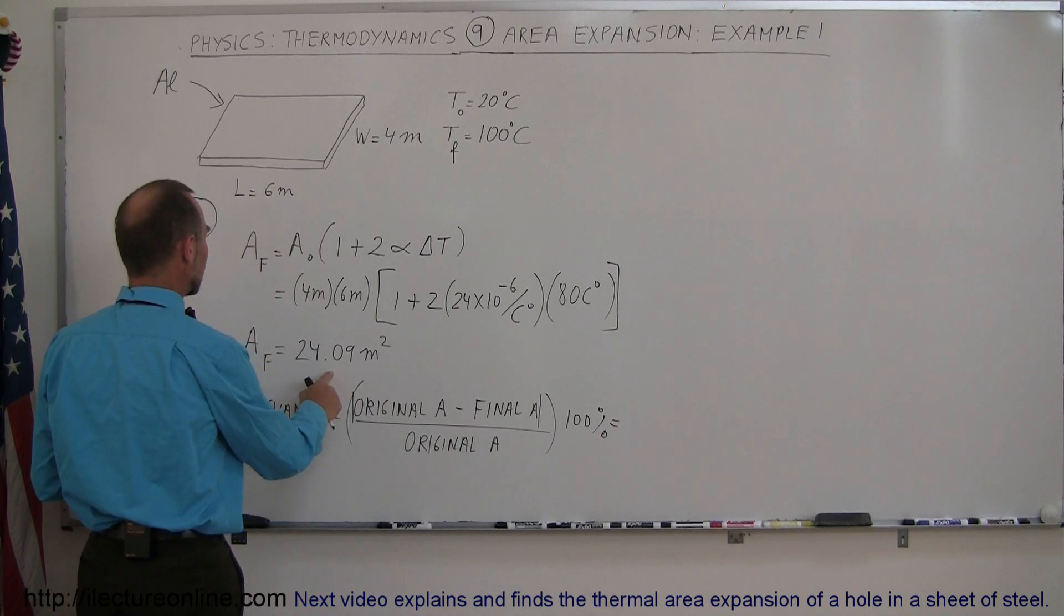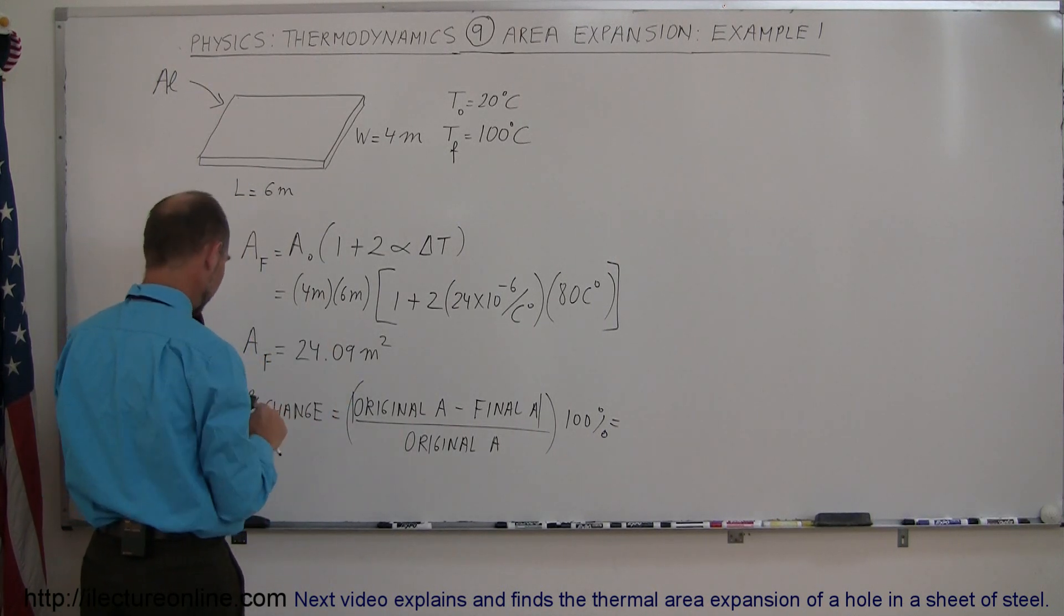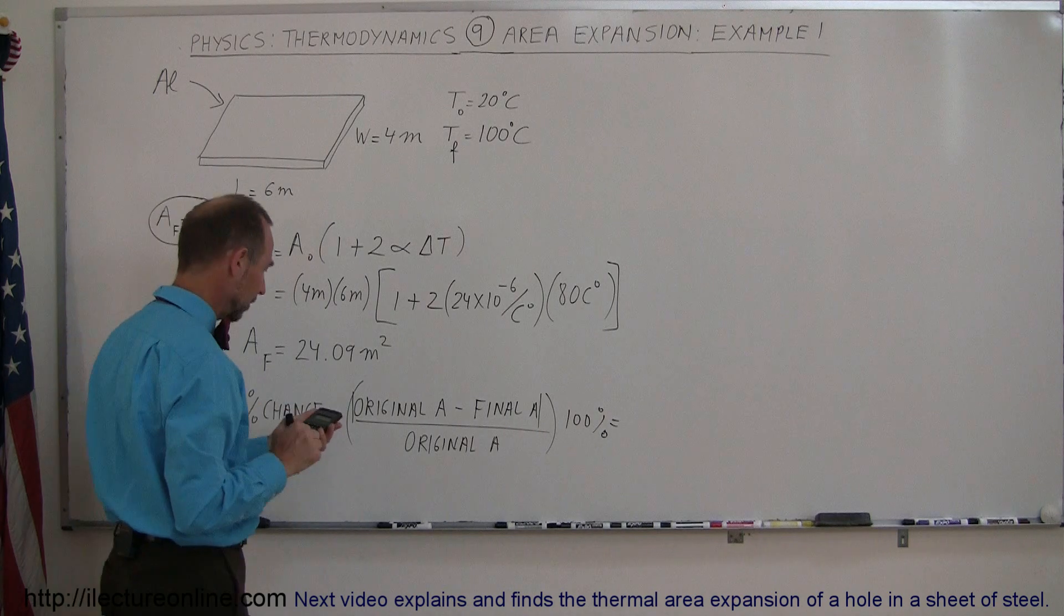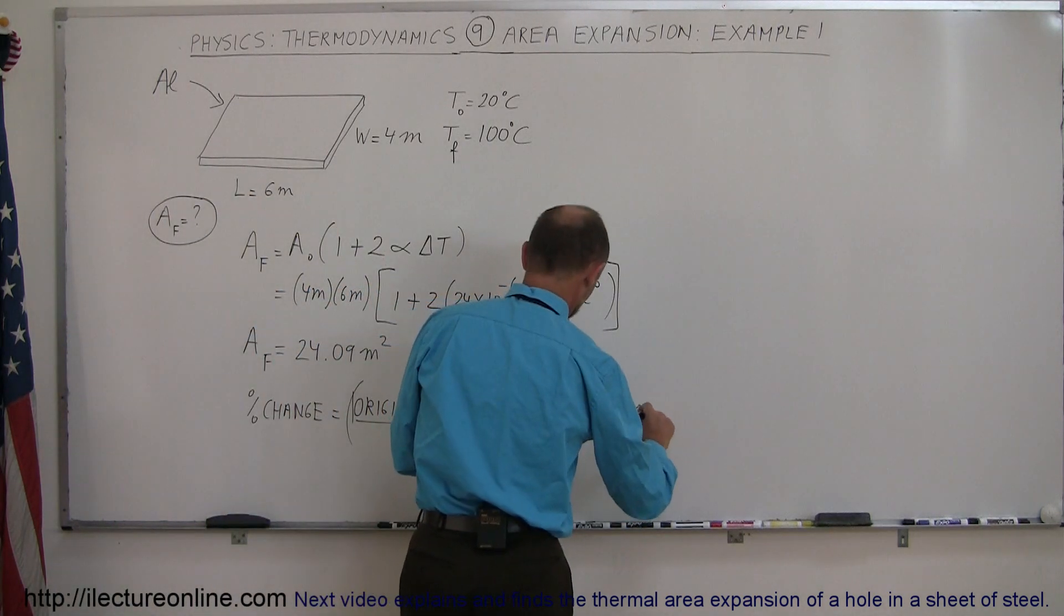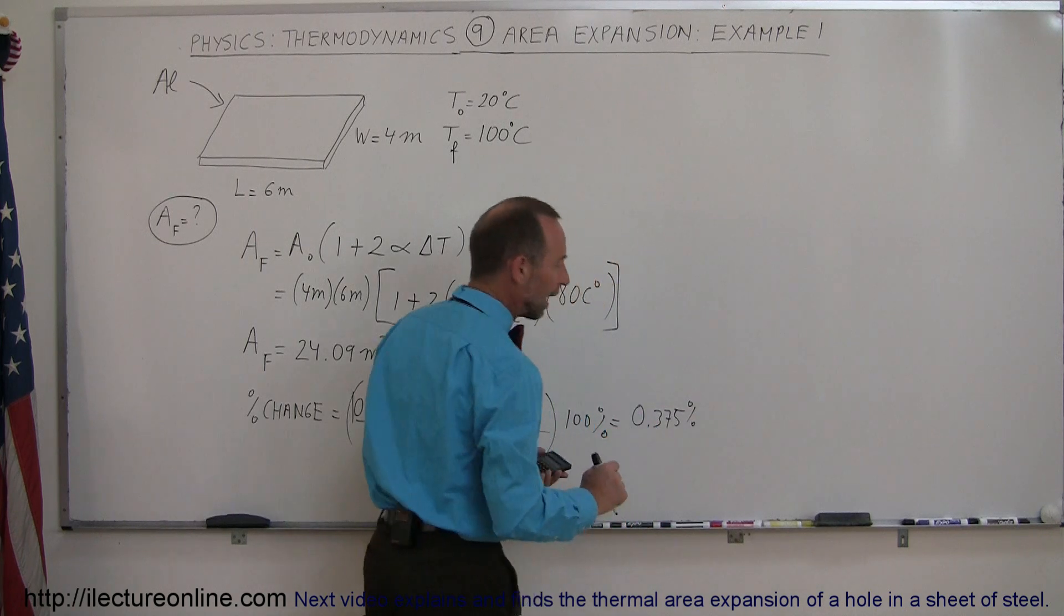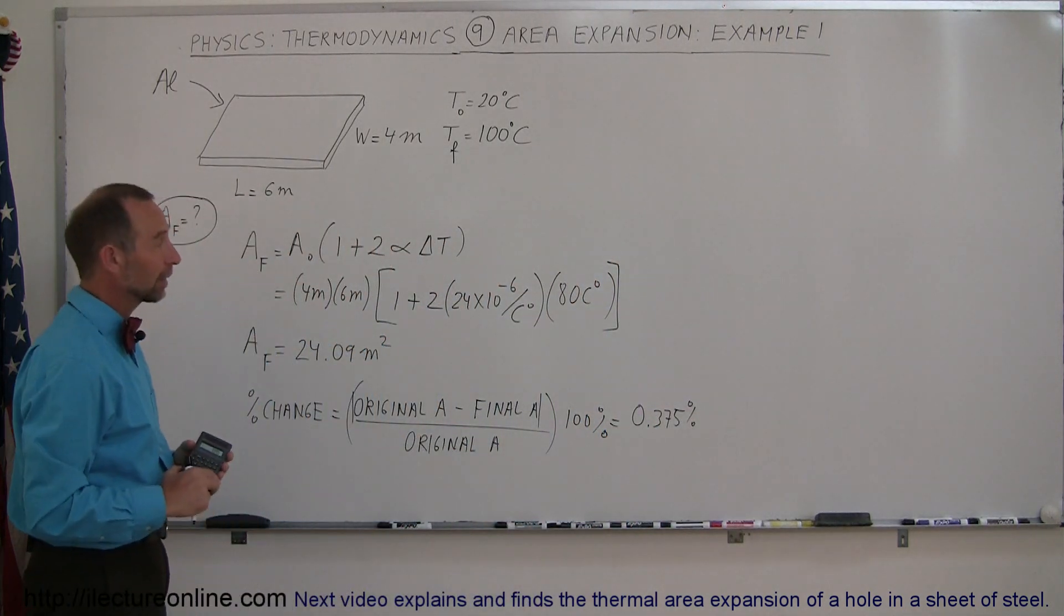So the difference between the two is 24.09 and 24, so that's 0.09 divided by 24, then times 100%, and so that ends up being a change of 0.375% in the area. And that's how we calculate that.